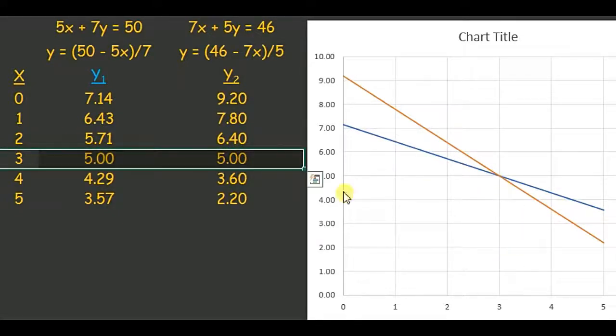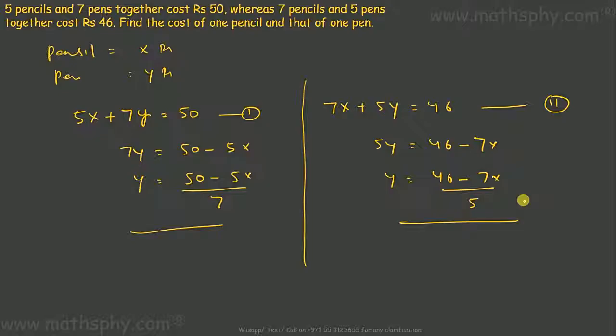The point of intersection is (3, 5). So the answer would be: pencil is x, so pencil would be 3 rupees per piece.